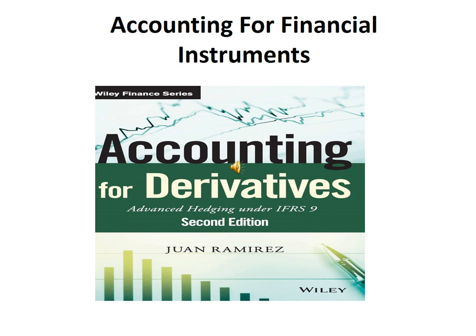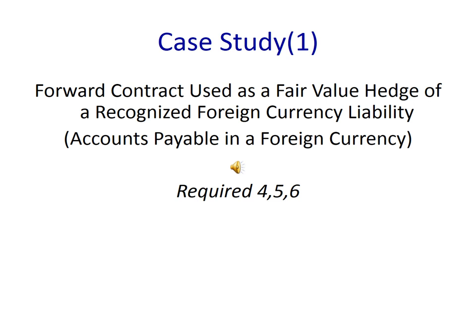Accounting for Financial Instruments, Lecture No. 2. This is Part 2 of our first case study, which is about forward contracts used as a fair value hedge of a recognized foreign currency liability, which is accounts payable in a foreign currency.